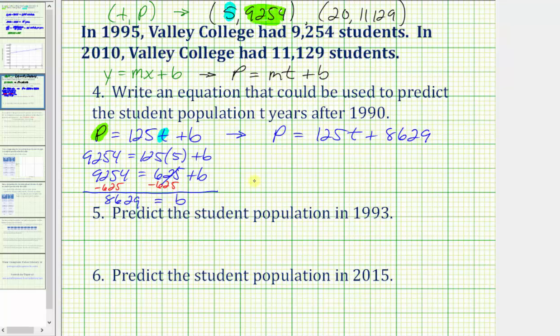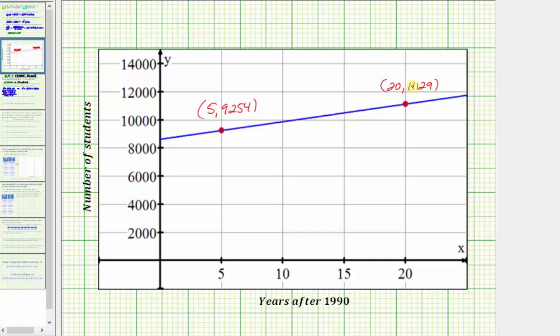Before we look at number five, let's look at the graph of this equation, as well as these two points on the coordinate plane. Here are the two ordered pairs from the given information. We just found the equation of this blue line which passes through these two points. The slope of the line is the average rate of growth per year. And notice how the vertical intercept here does look like it would be 8629, which we found algebraically.